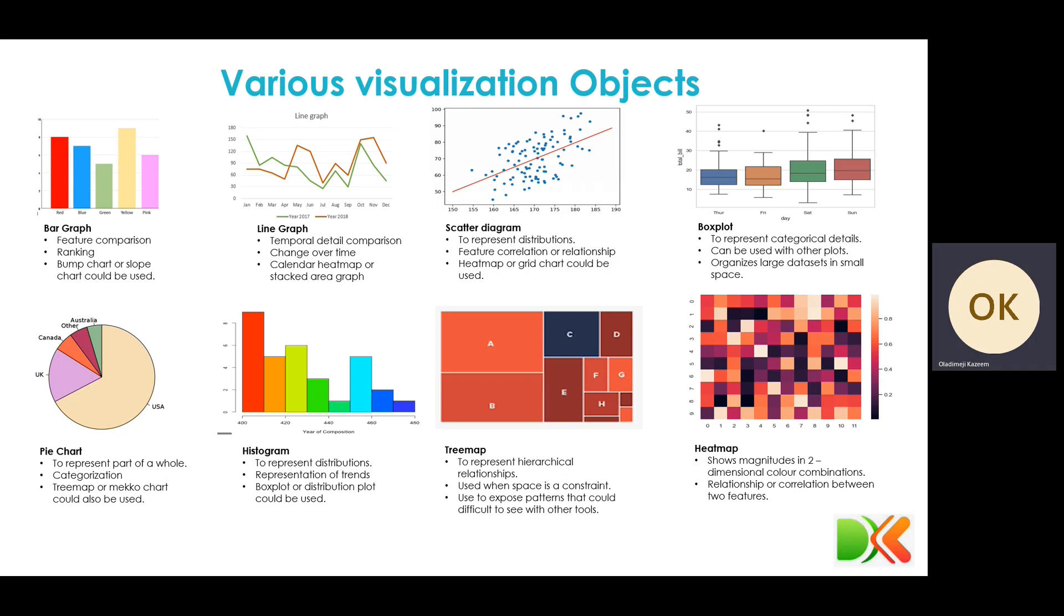Bar graph allows us to put them together. At the end of the day, we are able to compare the features in the data. We are able to rank them. Then we are able to change from bar graph to bump chart if that's also useful to us. So basically, that is the way that bar graph works. And in a similar manner, we can make use of a pie chart if we know that data is basically categorical.